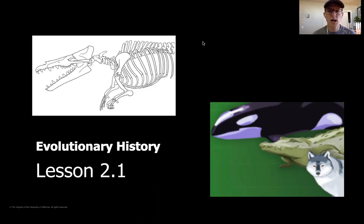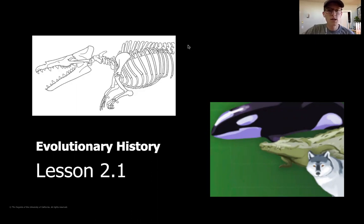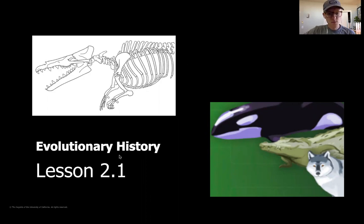We're going to be starting a brand new chapter on evolutionary history. We're going to start with a little review of what we learned in chapter two and go over what our goal is for this unit as scientists. And if you remember, we are acting as paleontologists while doing some investigation around evolutionary history, and in particular, this mystery fossil right here.